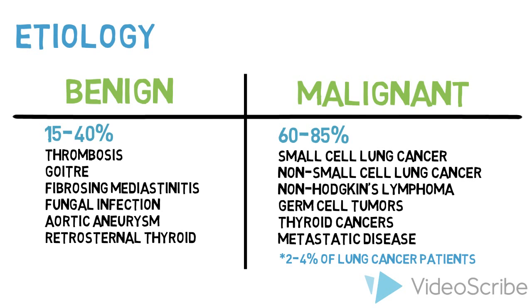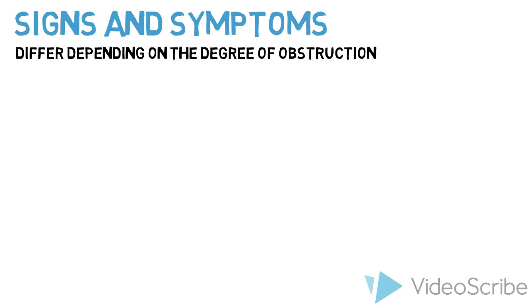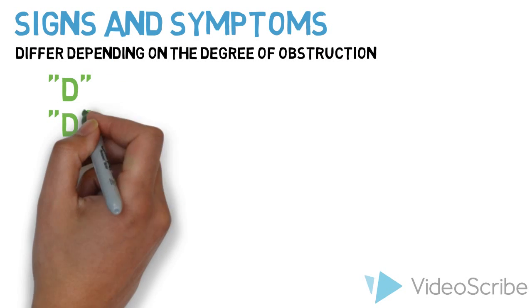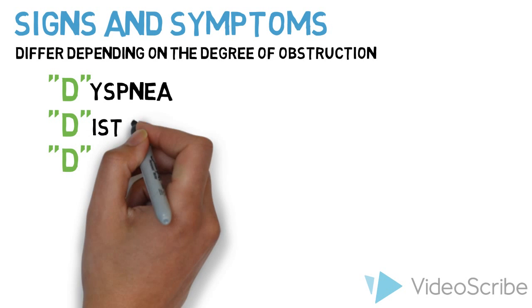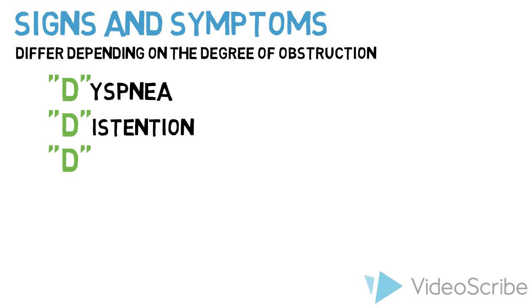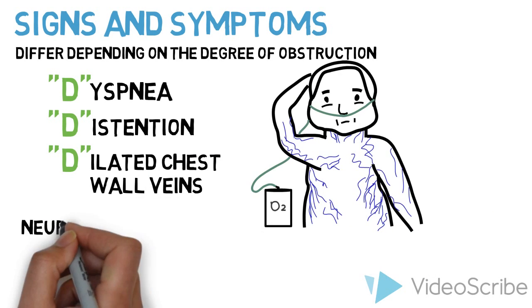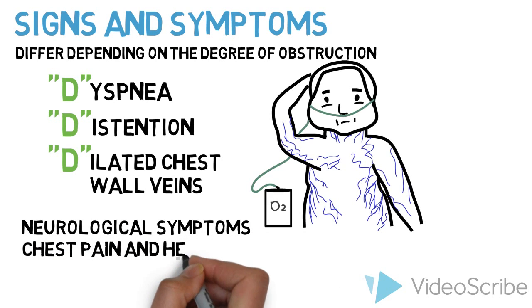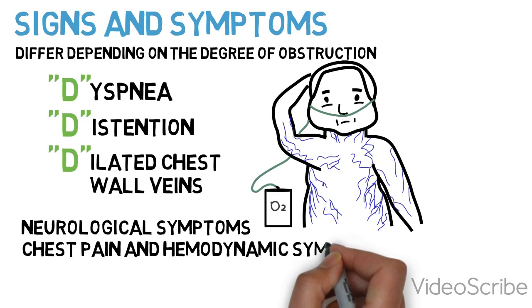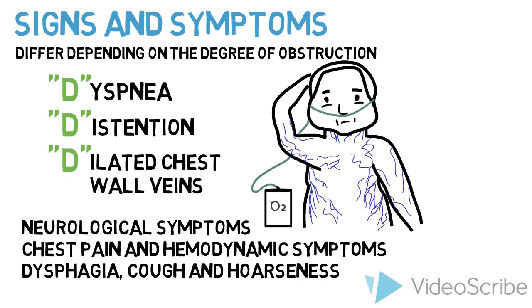The signs and symptoms of SVC syndrome differ depending on the degree of the obstruction. The 3Ds are helpful for recalling the major clinical features: dyspnea, distension — which includes edema of the face and arms and dilated chest wall veins. Other signs and symptoms include neurological symptoms due to cerebral edema, chest pain and hemodynamic symptoms due to poor cardiac output, as well as dysphagia, cough, and hoarseness due to compression of mediastinal structures.